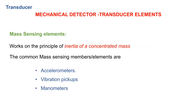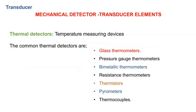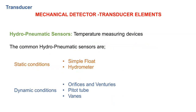Mass sensing elements include accelerometers, vibration pickups, and manometers. Thermal detectors include thermometers, bimetallic thermometers, spirometers, and thermocouples. The last category was hydropneumatic sensors — common examples include simple float, hydrometer, dynamic orifice, venturi, pitot tube, and vanes.